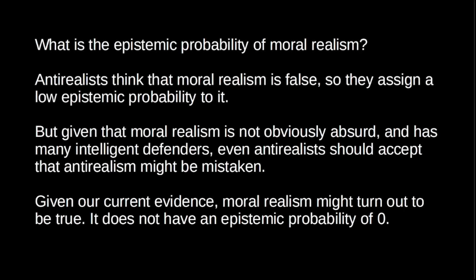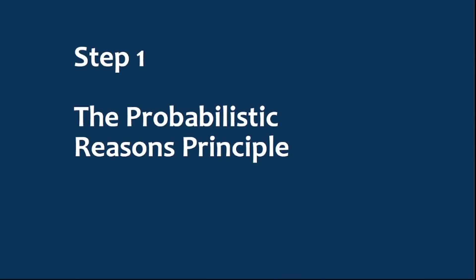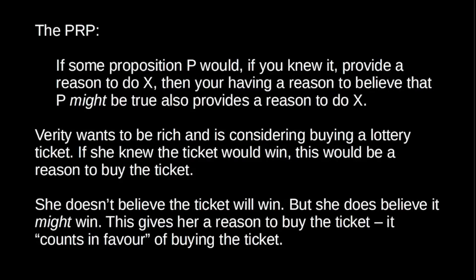The argument comes in essentially three steps. The first step is what Huma calls the probabilistic reasons principle. The probabilistic reasons principle says that if some proposition P would, if you knew it, provide a reason to do X, then your having a reason to believe that P might be true also provides you a reason to do X. A small epistemic probability for P provides a small reason for action.